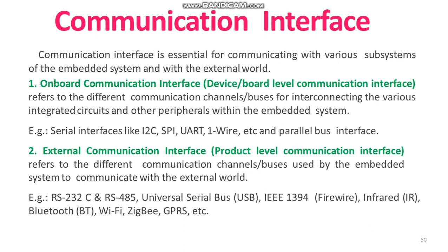Examples for onboard communication interface are serial interfaces like I2C, SPI, UART, OneWire, etc., and also the parallel bus interface. For external interfaces we have RS-232C, RS-485, USB, and IEEE 1394 — these are the wired interfaces. Whereas wireless includes infrared, Bluetooth, Wi-Fi, ZigBee, GPRS, etc. So let us see one by one all these interfaces and study the examples for each.